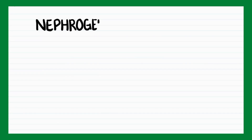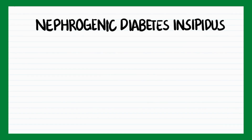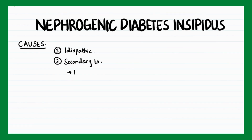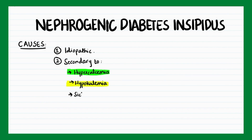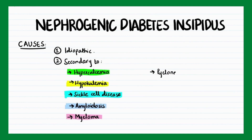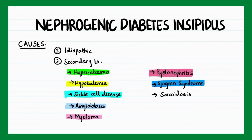Moving on to nephrogenic diabetes insipidus — it could be idiopathic, or secondary to hypercalcemia, hypokalemia, sickle cell disease, amyloidosis, myeloma, pyelonephritis, Sjogren's syndrome, sarcoidosis, or drugs such as lithium, colchicine, and demeclocycline.